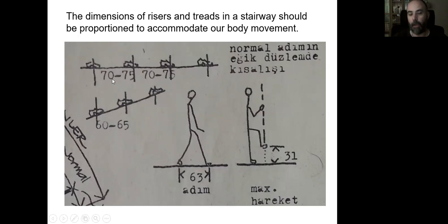When we are walking on a horizontal surface, the standard approximate distance between our two foot steps are 72 to 75 centimeters. However, if the surface is inclined like a ramp, then this distance decreases to 65 to 66 centimeters. So this is something that we need to consider.